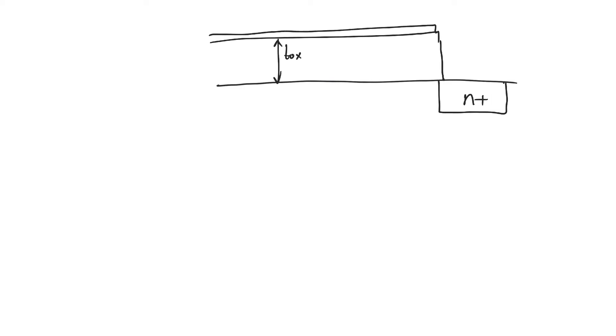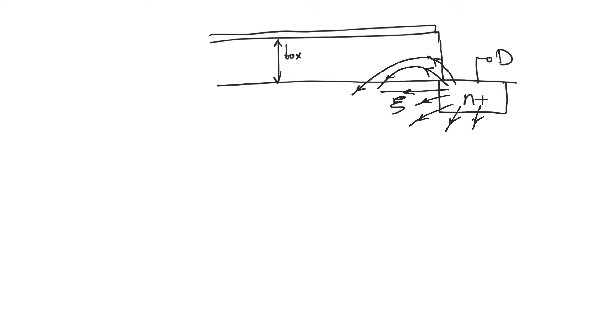In a long channel transistor, this is the drain. Long channel usually also means we are using a relatively thick oxide. We apply a drain potential here, and this drain potential causes an electric field into the channel. This electric field is not linear — it has field lines that go into the body and also some field lines that go into the oxide. These field lines curve back down, and because the oxide is thick they only extend into the oxide to a very shallow depth.